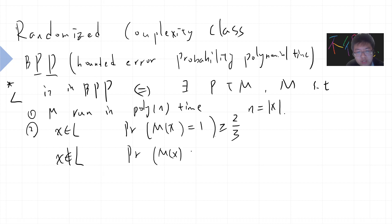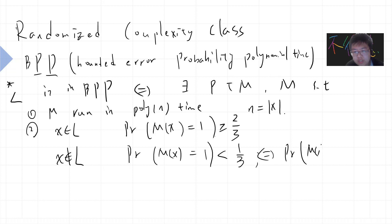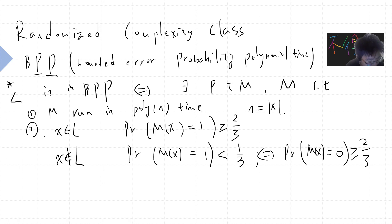If x does not belong to L, then the probability that M of x outputs one is less than one-third — which is the same as the probability that M of x outputs zero being greater or equal to two-thirds. This is the first definition.